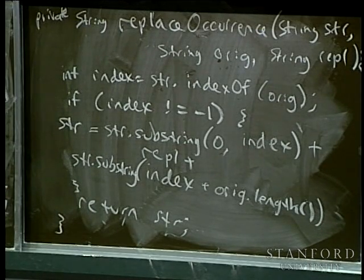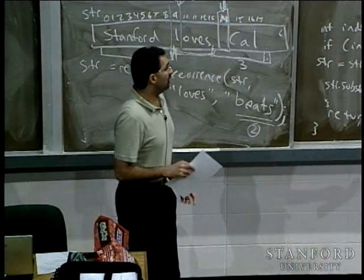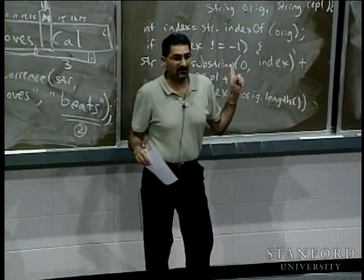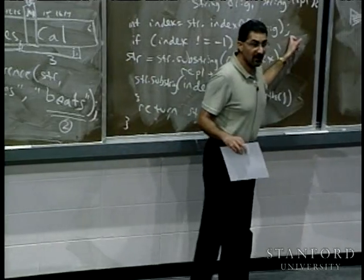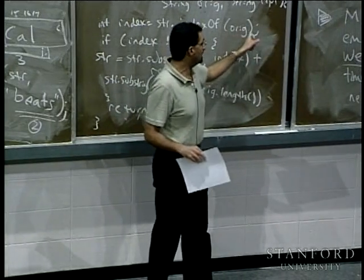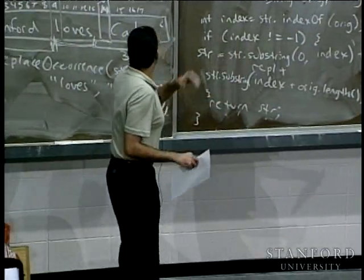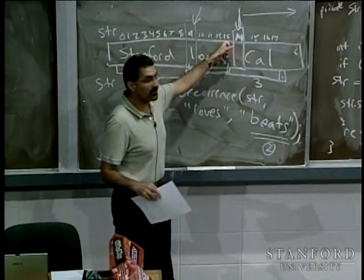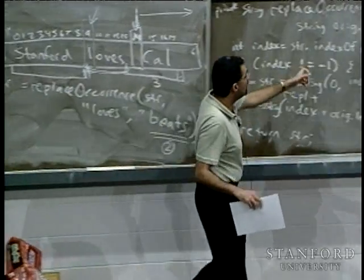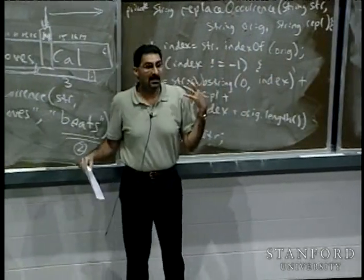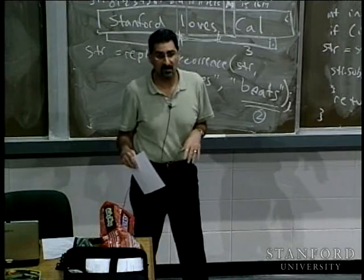If 'loves' appears more than once, indexOf just returns the index of the very first occurrence. There's actually a version of indexOf that takes two parameters — the thing you're looking for and the position from which you should start looking. But indexOf always returns the index of the very first occurrence of the string you're looking for.